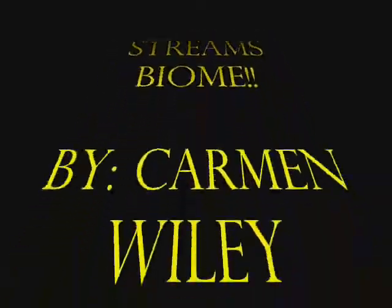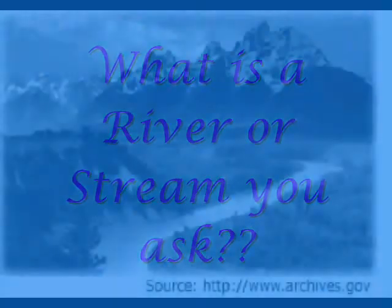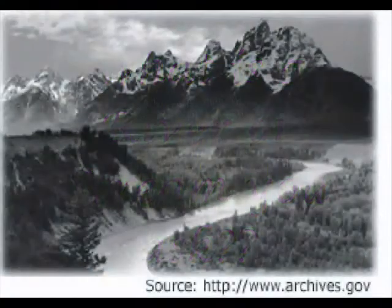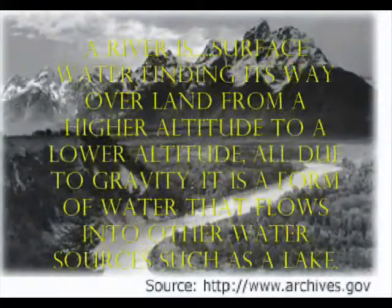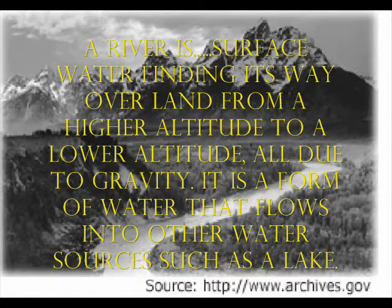The Rivers and Streams Biome by Carmen Wiley. A river or stream is surface water finding its way over land from a higher altitude to a lower altitude, all due to gravity. It is a form of water that flows into other water sources such as a lake.